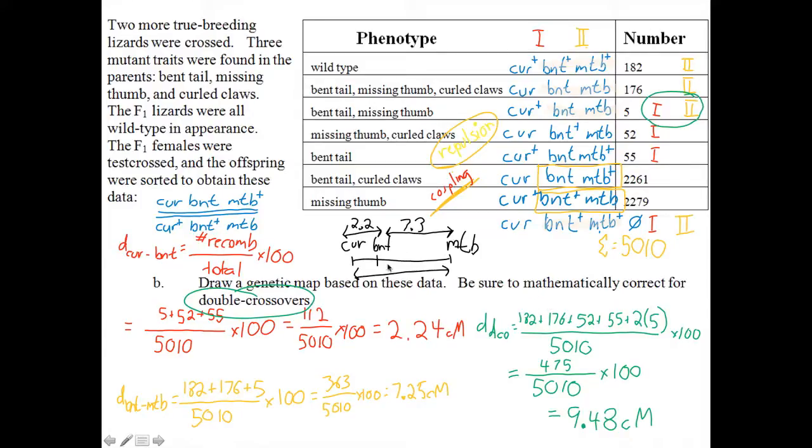Now, here's the map. I asked you to draw a genetic map, so you have to draw all the distances. Notice I put my curled claws and my missing thumb on either end. And I've put my bent tail slightly closer to curled claws. This is a more correct answer than putting it right in the middle. Because the distance between curled claws and bent tail is 2.2 centimorgans. The distance 7.3 is much larger. And then we can write down 9.48 centimorgans as our distance from the outermost parts. And if everything adds up, then you're pretty sure you're going to get full marks for this, provided you didn't leave out steps.